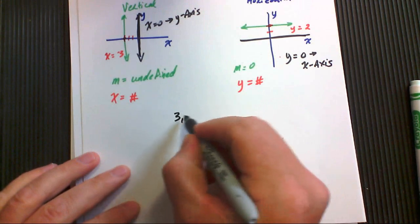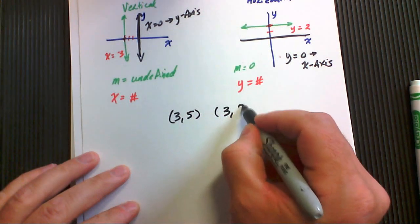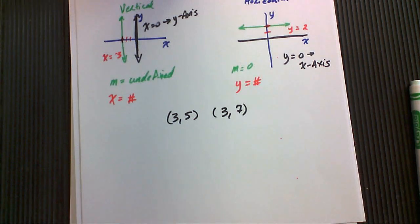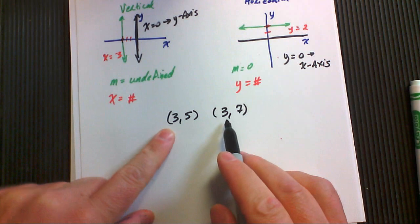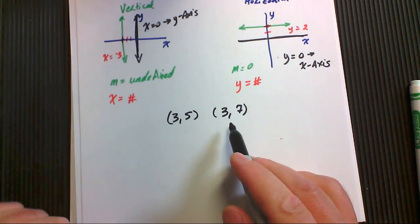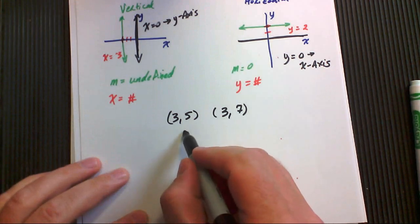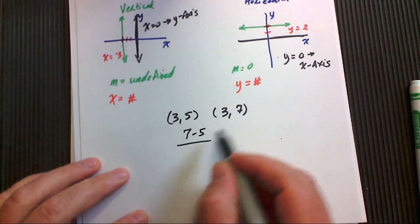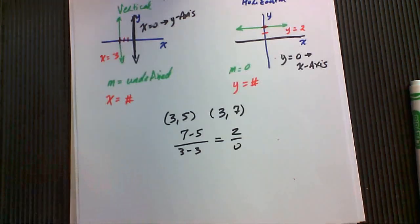So let's say we had the ordered pair three comma five and three comma seven. First of all, notice that both of the x's are the same. It's going to look like this, okay? It's going to be a vertical line and it's going to have an undefined slope. Seven minus five, three minus three, that's two over zero.